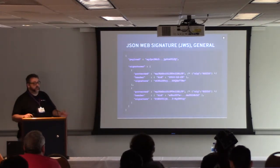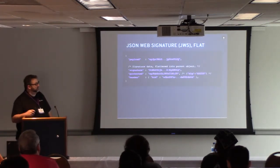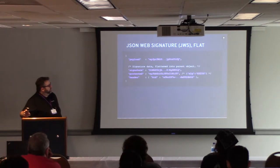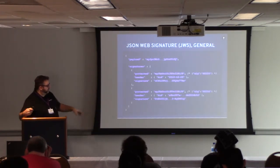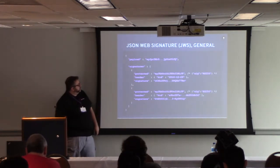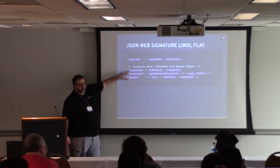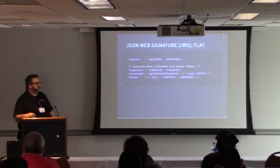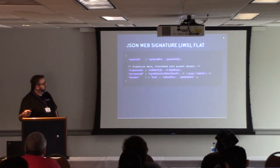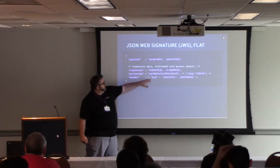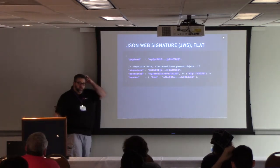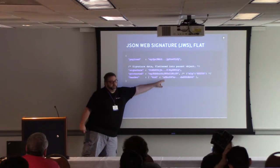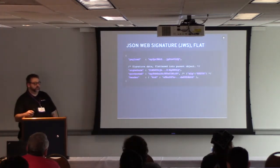If you only ever have one signature, you can use another serialization called flat. The flattened serialization just takes all the data from that one signature and moves it up in the object hierarchy — so the protected header and signature move up, taking up a little less room. In the header you can include the key ID, so if you receive this JWS, you could look in some key repository for that particular key ID to validate the signature.